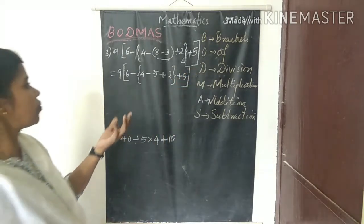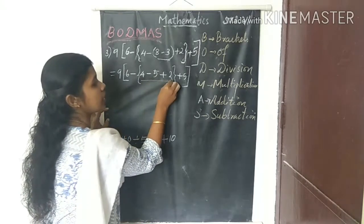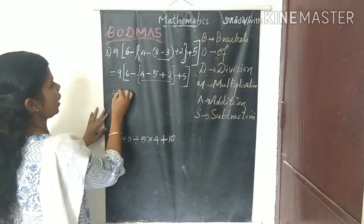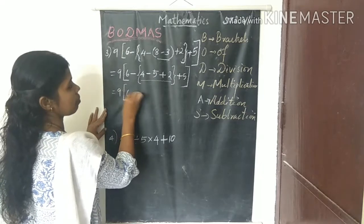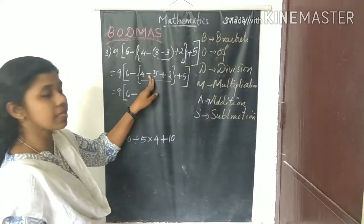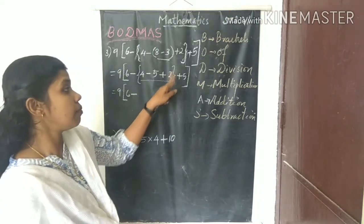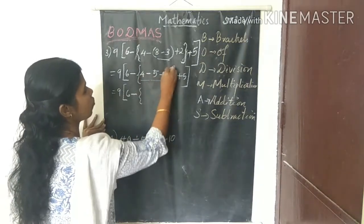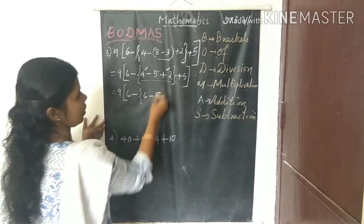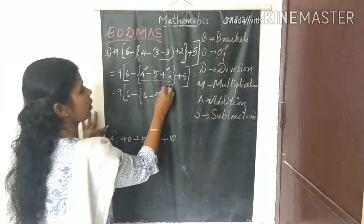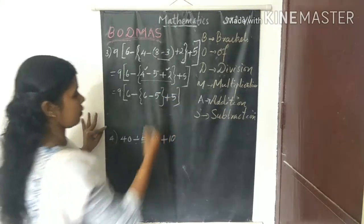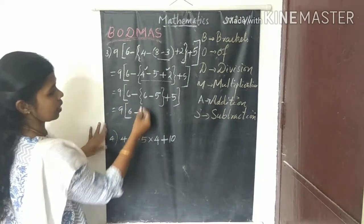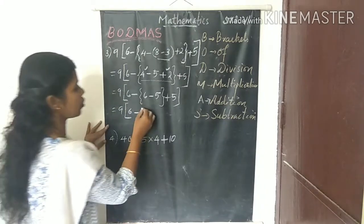Next, we do the operation inside the curly bracket. We have 4 minus 5 plus 2. First do addition: 4 plus 2 equals 6. Then 6 minus 5 equals 1. So curly bracket gives 1. Now we have: 9 × [6 - 1 + 5].